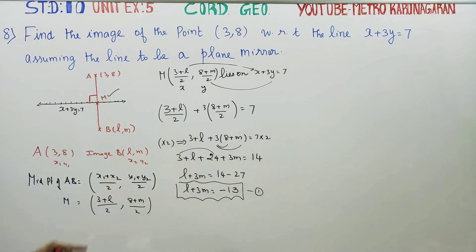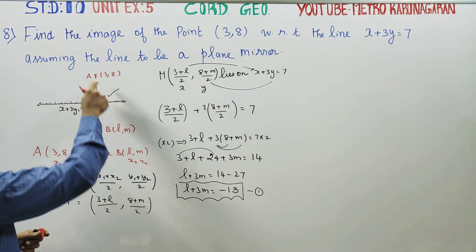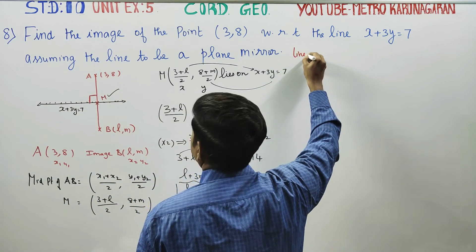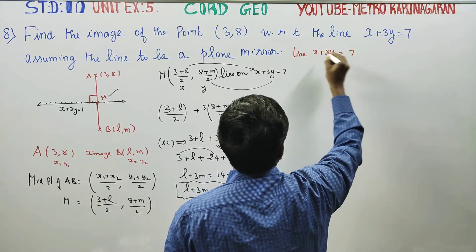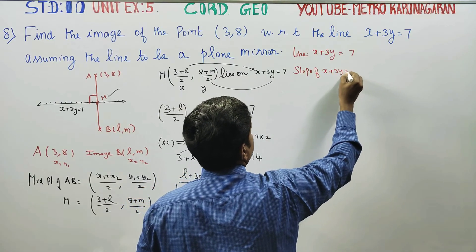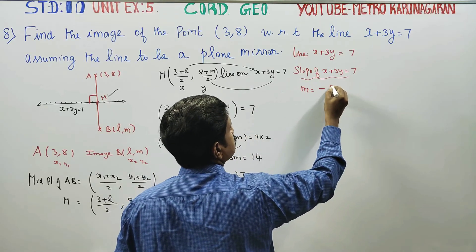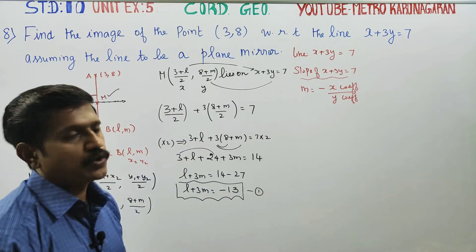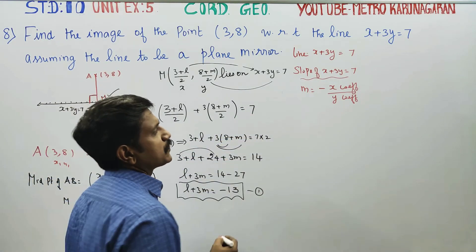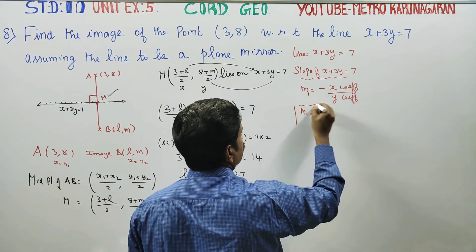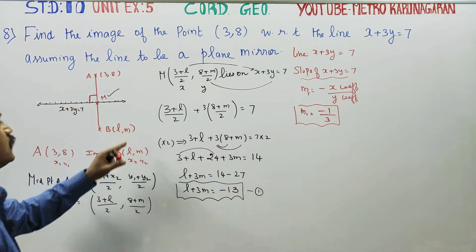Now we use the perpendicular concept. The line AB is perpendicular to x plus 3y equals 7. First, find the slope of the given line. The slope formula is m equals minus of x-coefficient divided by y-coefficient. So slope m1 equals minus 1 by 3. This is the slope of line AB's mirror line.